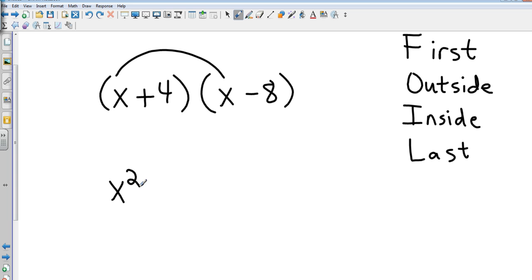Then we're going to multiply our outside terms, that's x times negative 8, so that's going to be negative 8x. Then we're going to multiply our inside terms, that's 4 times x, so it gives me a positive 4x. And then we're going to multiply our last terms, that's positive 4 times negative 8, which is negative 32.